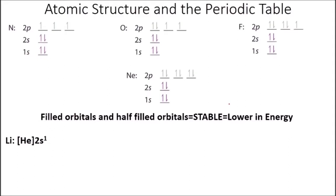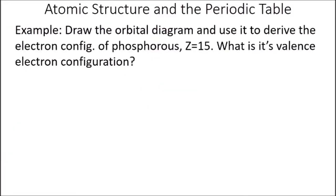We can simplify things using bracket notation, which shows only the configuration of the valence shell. For lithium it's [He] 2s1. Electrons in filled inner orbitals are closer to the nucleus and by Coulomb's law are more tightly held — they are rarely involved in chemical reactions. The valence electrons in the outermost shell are the reactive ones because they are far from the nucleus. Both lithium and sodium have one S electron in their valence shell, so we predict they have very similar chemistry — which is indeed the case.